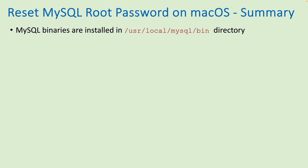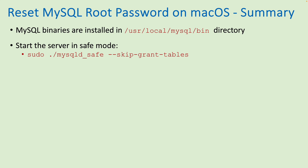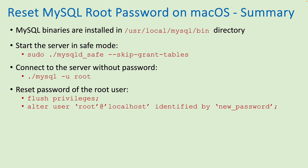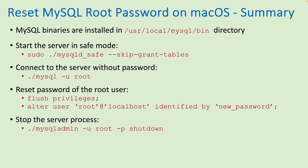Let me sum up the key points to remember in order to reset MySQL root password on a Mac computer. The MySQL binary executables are installed in /usr/local/mysql/bin by default. Start the server in safe mode in terminal using mysqld_safe with the parameter --skip-grant-tables. Connect to the server without a password from the MySQL command-line program. To reset the password of the root user, execute two queries: FLUSH PRIVILEGES and ALTER USER 'root'@'localhost' IDENTIFIED BY 'new_password'. To stop the server process, type the mysqladmin shutdown command in another terminal window and enter the new password when prompted.